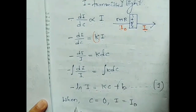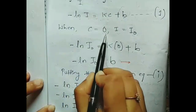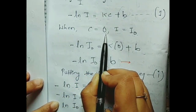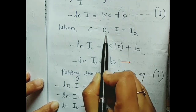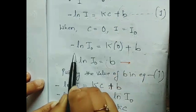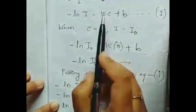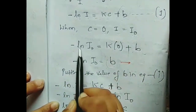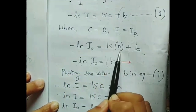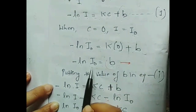So minus ln I equals KC plus B, where B is a constant of integration. Let us consider when C equals zero — that is, when there is no absorption. When there is no absorption by the sample, we know that incident light equals transmitted light, so minus ln I naught equals K times zero plus B.